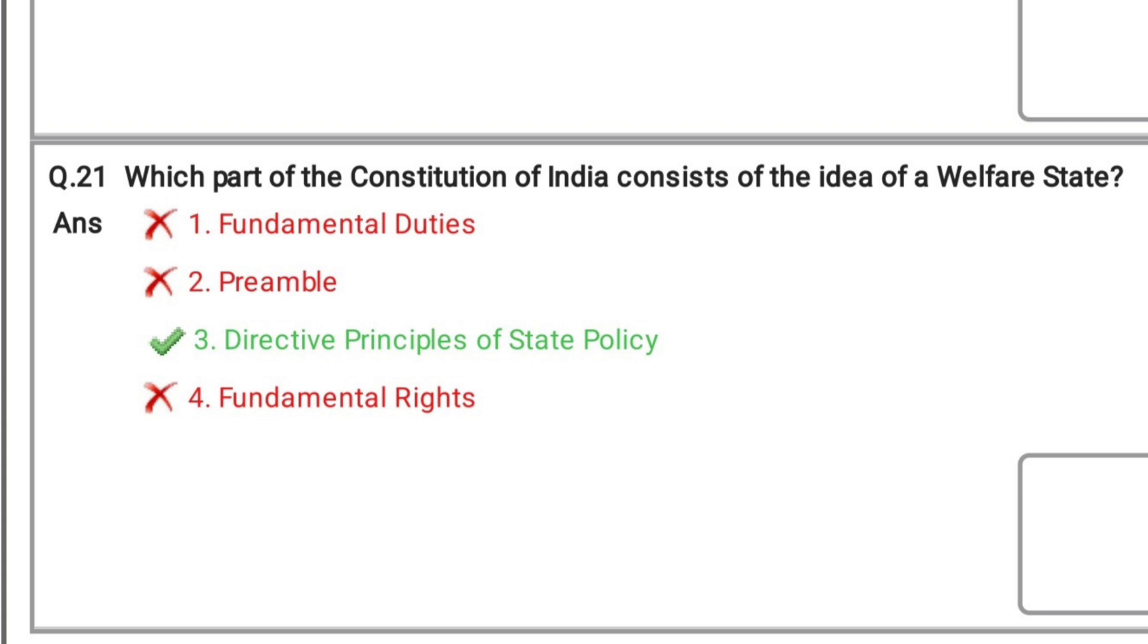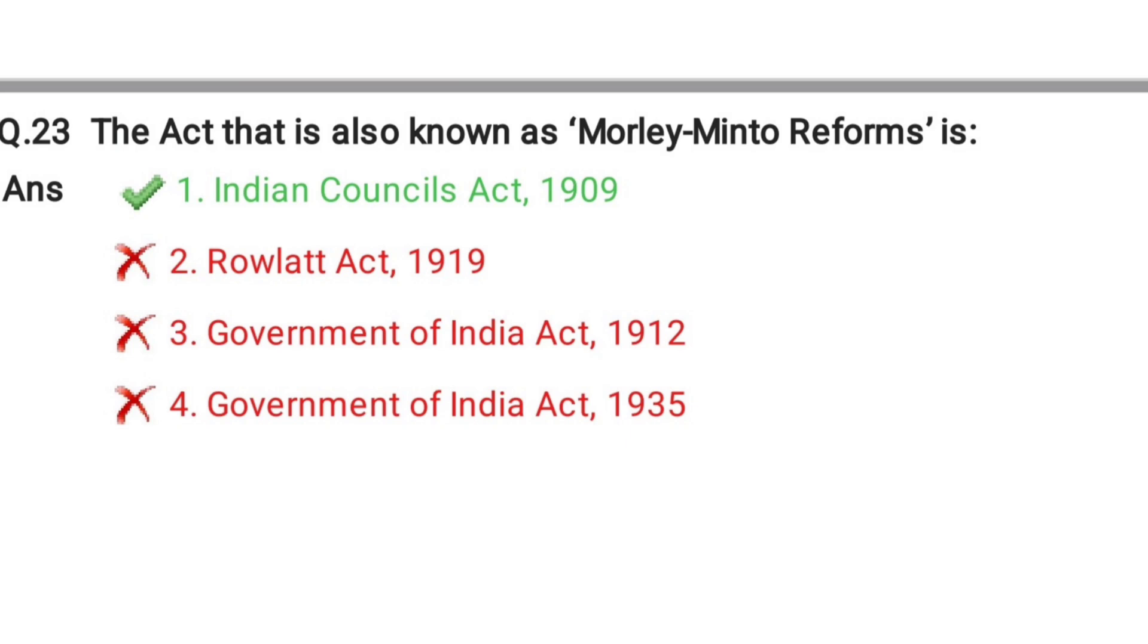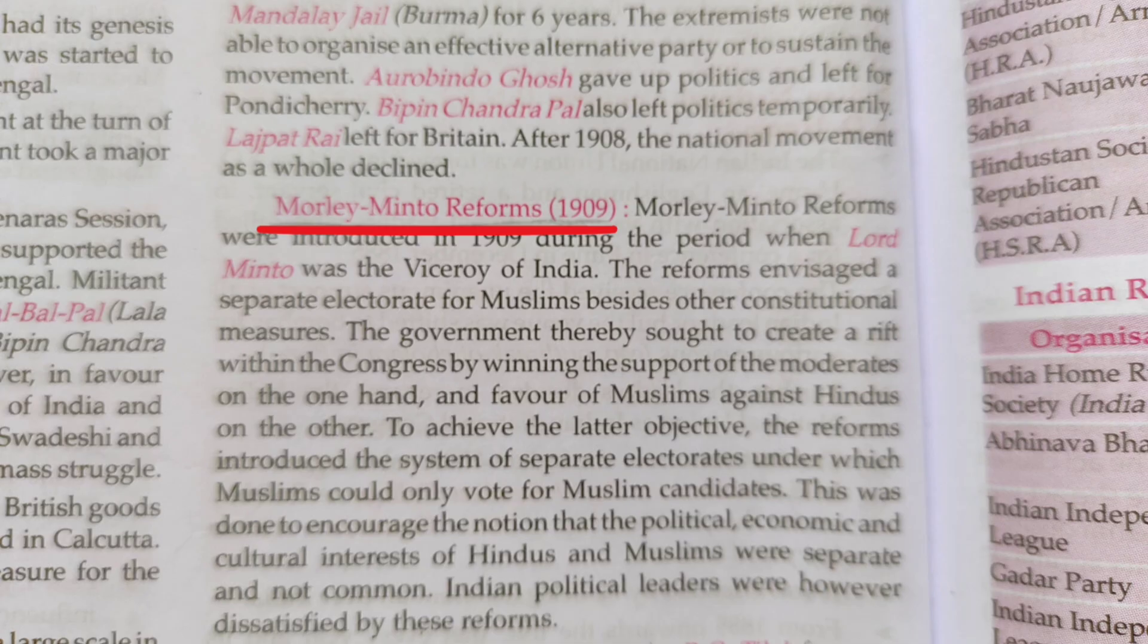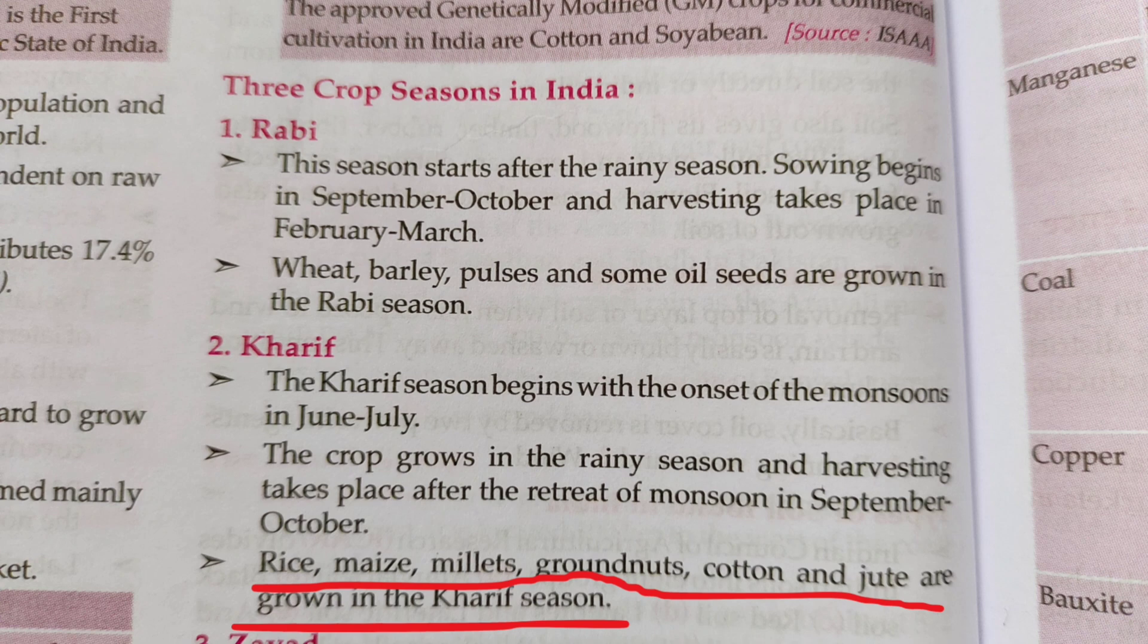Welfare state. Here again direct, DPSP direct question. You can see here DPSP, welfare of the people. Morley-Minto Reforms. If you remember the year, you can directly mark it. Morley-Minto Reforms 1909. Here, if you have basic idea like paddy, maize are kharif crops, you can eliminate statement 2 from the options and mark the correct answer.